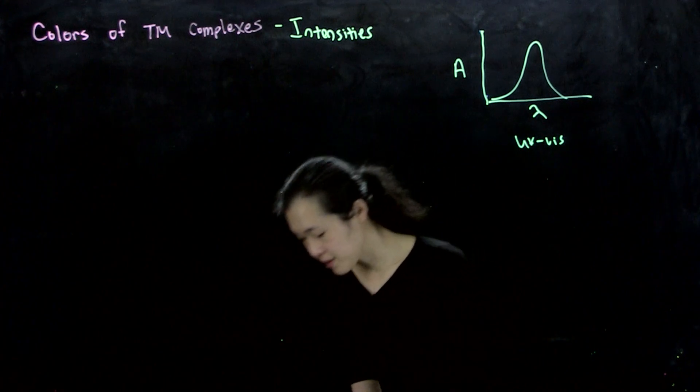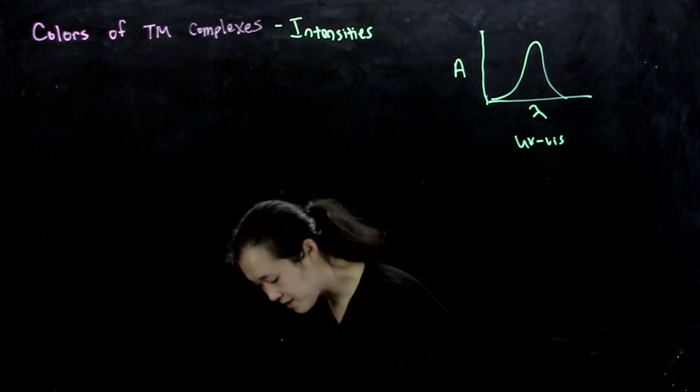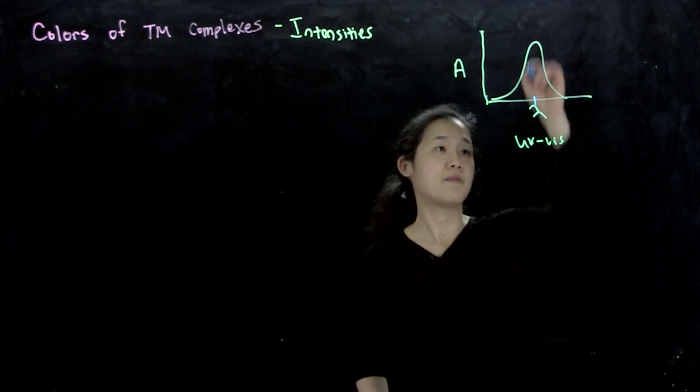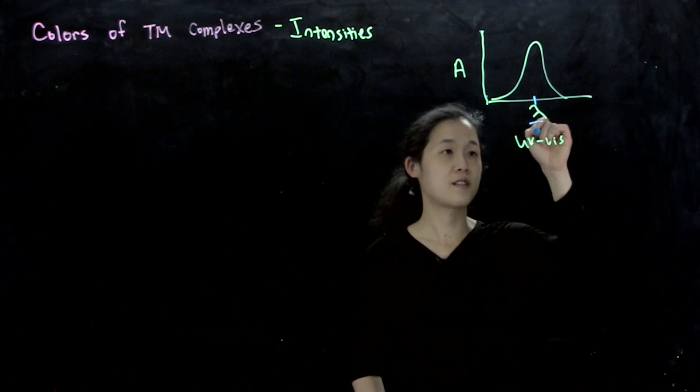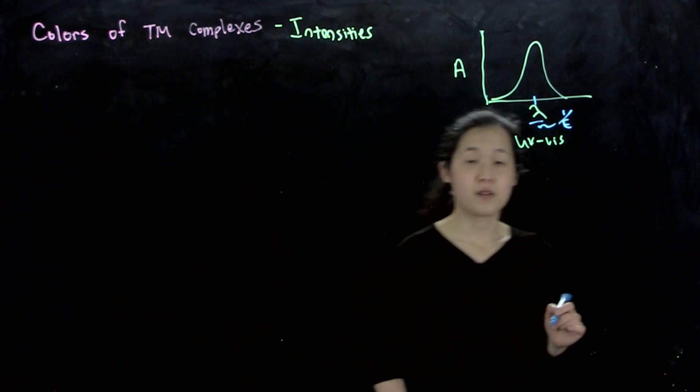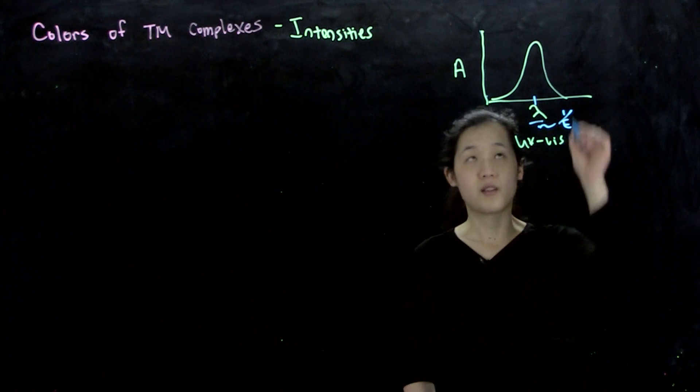And what we're saying was that this position is going to be your energy. So lambda, if you're related to energy, or I guess it's 1 over energy, in fact. So this is what delta O is. This is the energy.